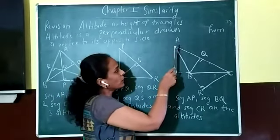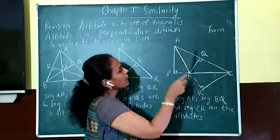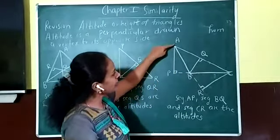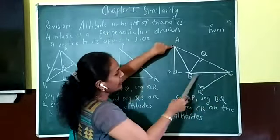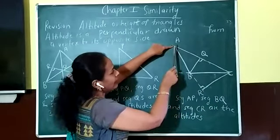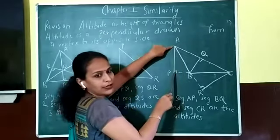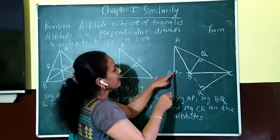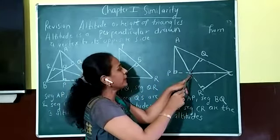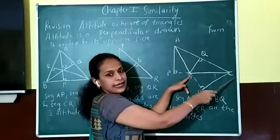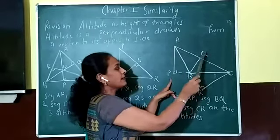The first altitude is drawn from vertex A to the opposite side. Vertex A is here and its opposite side is BC. But I have to extend the side so that I can rest this perpendicular on it. This is one altitude drawn from A. Similarly, the second altitude is drawn from B to its opposite side AC. AP is the first altitude and BQ is the second altitude.